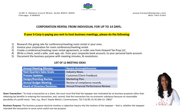The third thing that you want to do is create a conference meeting room rental agreement, or you can order one from Howard Tax Rep LLC. The fourth thing you want to do is write a check, or you could do a Zelle payment, Cash App, Apple Pay, etc., from your corporate bank account to your personal bank account. Because if you never send the money from the corporation to you the individual, then your invoice and your rental agreement is invalid because you never made the payment.